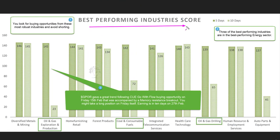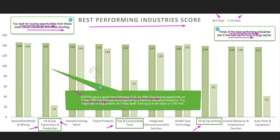In the best performing industries analysis, we look at industries' five day and ten day scores. Using the Q360 degree technique, we like to align forces from the industry fundamental and technical level with our trades. Three of the best performing industries are in the best performing energy sector: oil and gas exploration and production, coal and consumable fuels, and oil and gas drilling. In oil and gas exploration and production, the stock GPOR gave a trend following go-with-flow buying opportunity on Friday 15th February, also accompanied by a memory trendline resistance breakout.